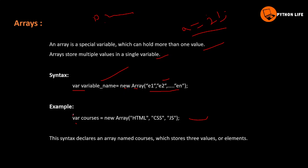An example: var courses = new Array('HTML', 'CSS', 'JavaScript'). This syntax declares an array named courses which stores three element values. So this is an array.